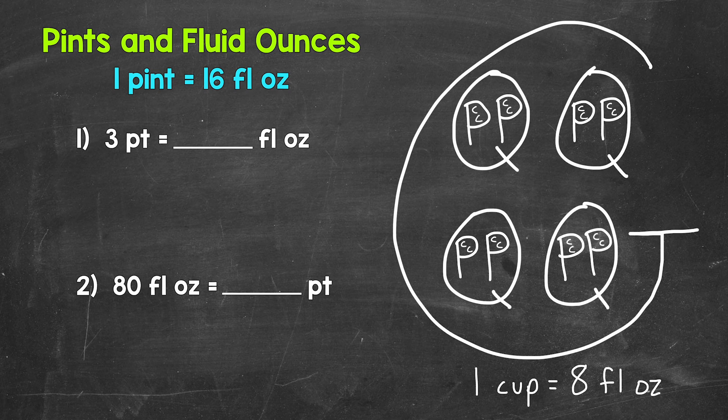To start, there are 16 fluid ounces in a pint. In other words, one pint equals 16 fluid ounces.